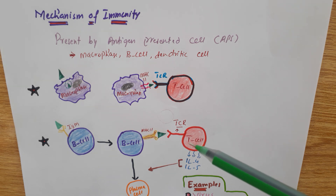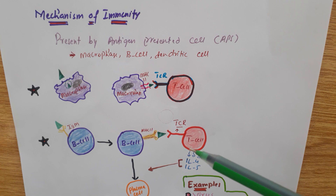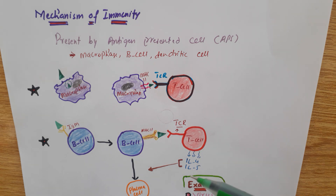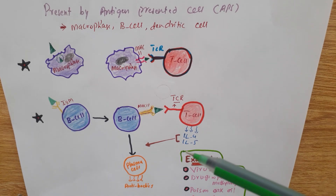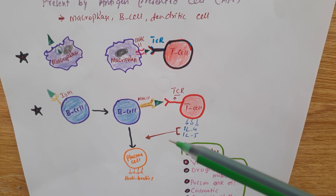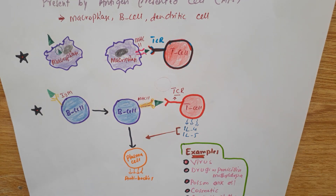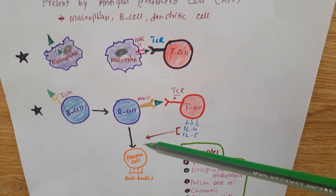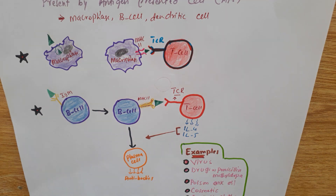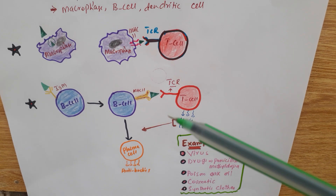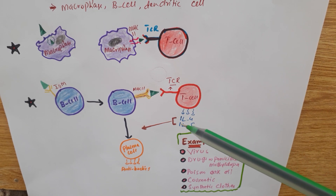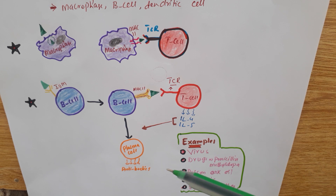When the T-cell is activated, this T-cell is actually a T-helper 2 cell. T-helper 2 cells secrete interleukin-4 and interleukin-5. These interleukin-4 and interleukin-5 help the B-cells convert into plasma cells, and then these plasma cells secrete antibodies. For interleukin-4, that will be IgE; for interleukin-5, that will also be IgE.